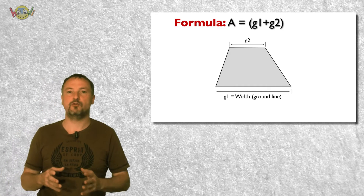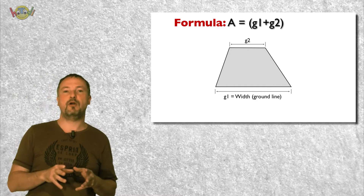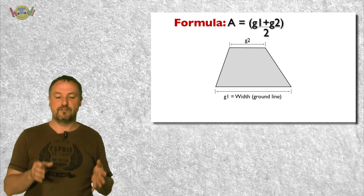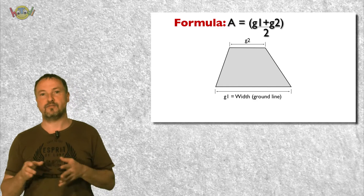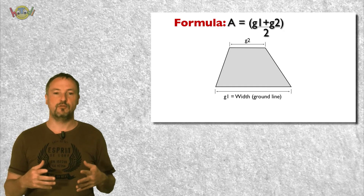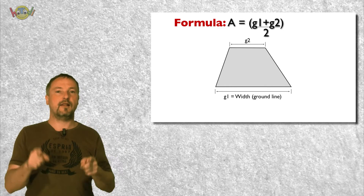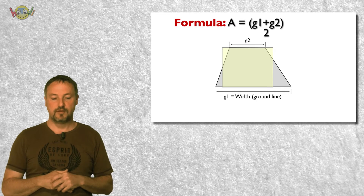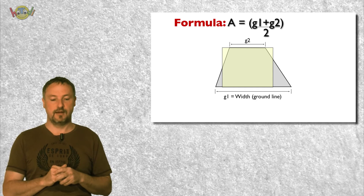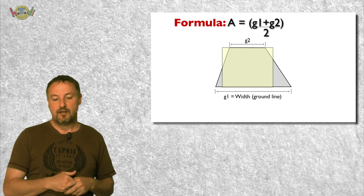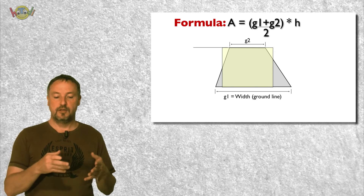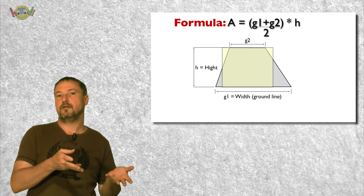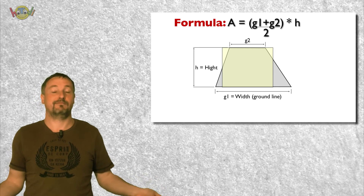Now what we are going to do is get the middle value of both of these lengths, and this is really quite simple. We just take G1 plus G2, divide it by 2, and we have an exact middle length of both. What we get out of this is a virtual rectangle. You remember the formula for a rectangle: G multiplied by H, the height — or A multiplied by B. And that's it.